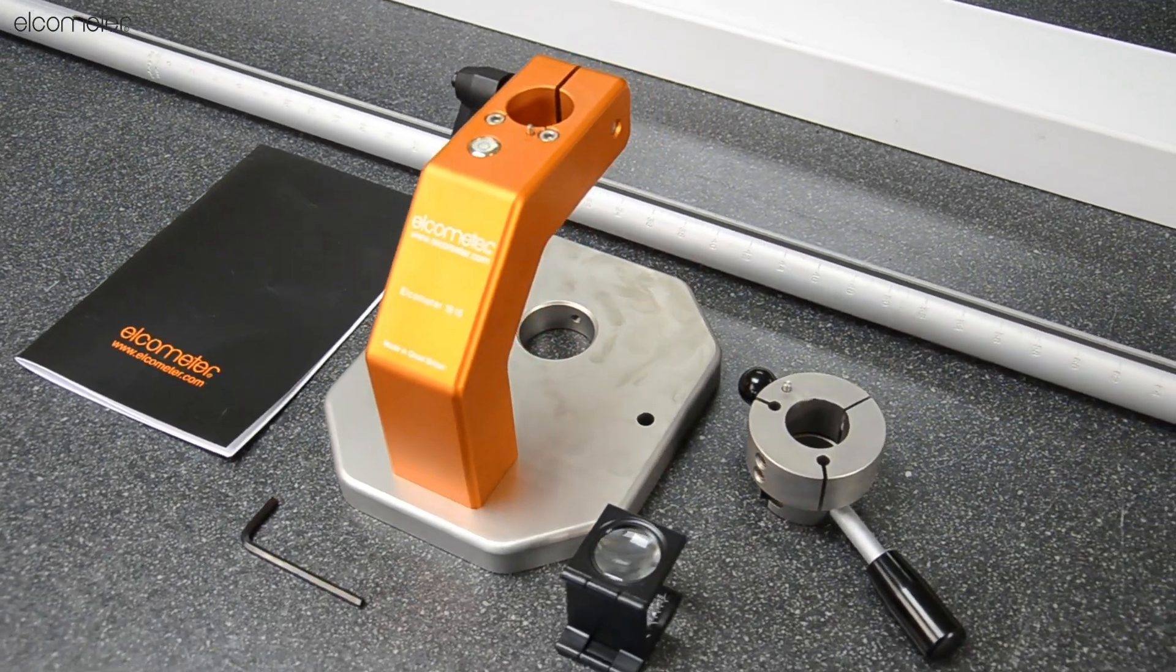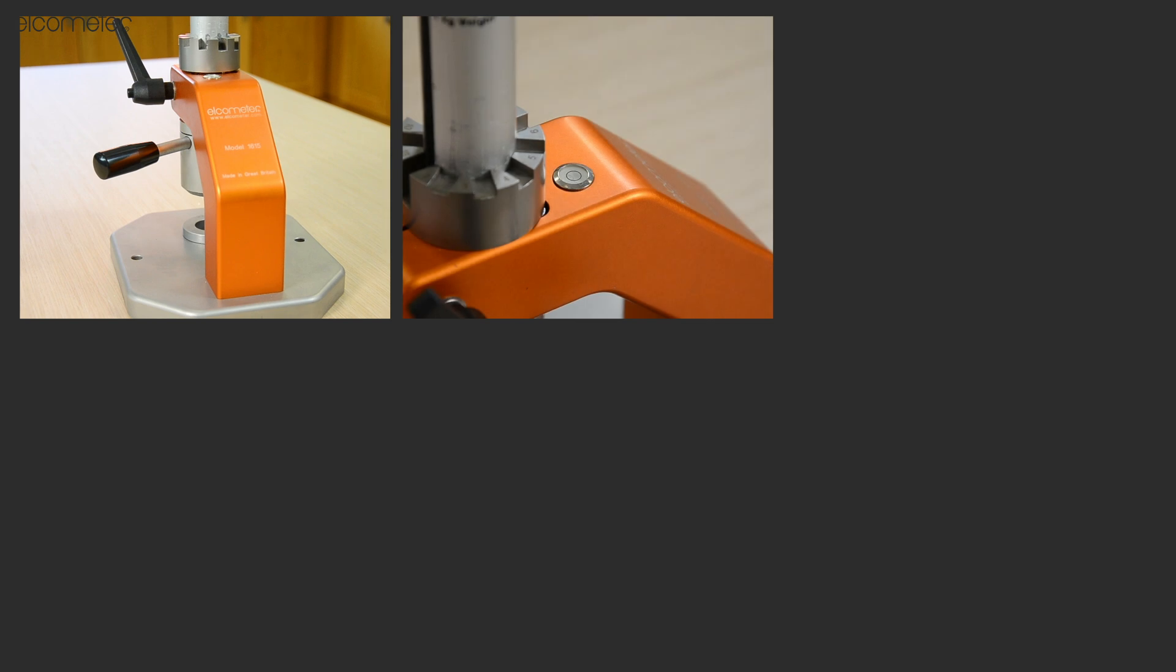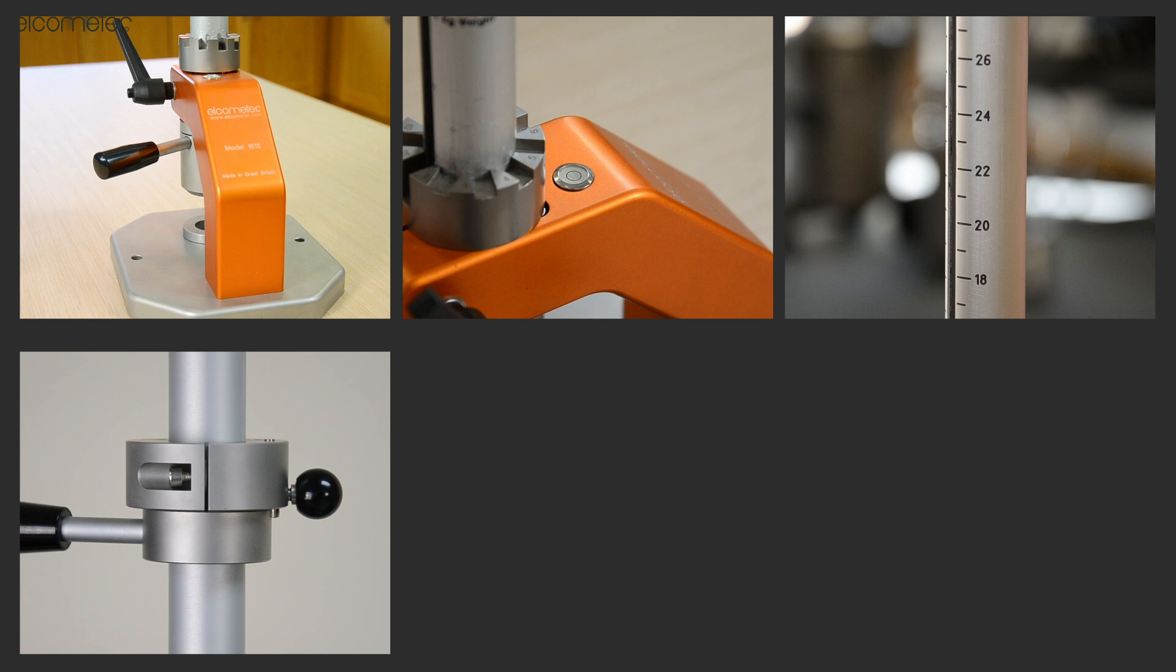The Elcometer 1615 Base Unit Kit contains an impact tester and base with an integrated bubble leveler, a graduated tube, and a collar release mechanism to hold and release the weight or indenter.